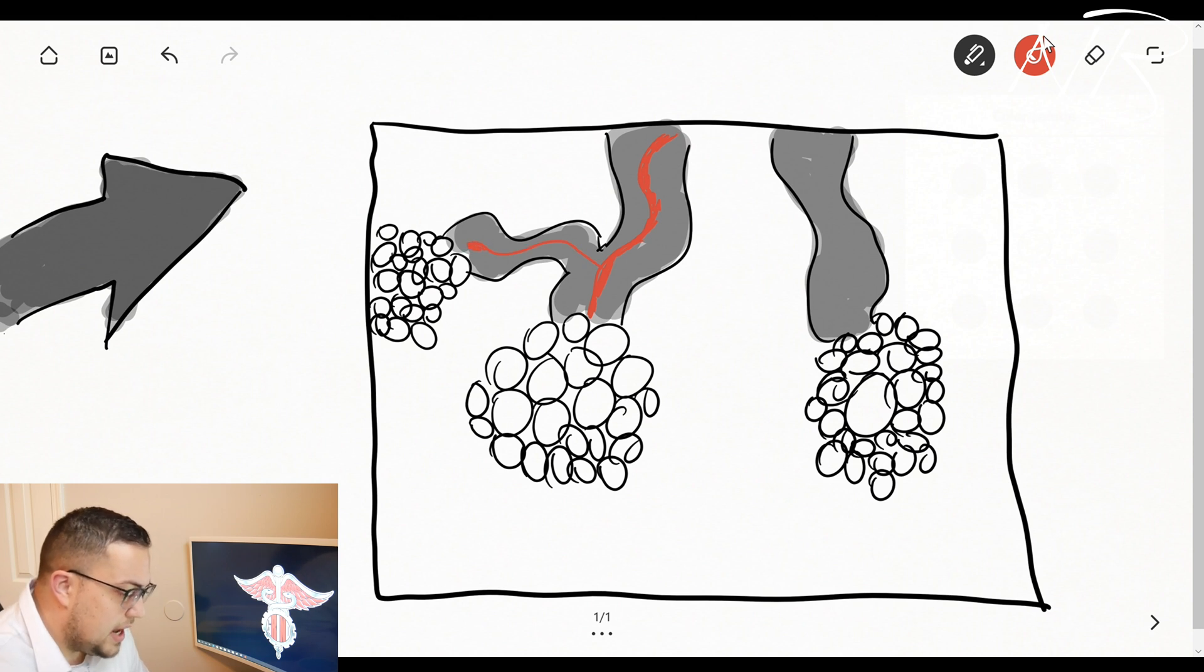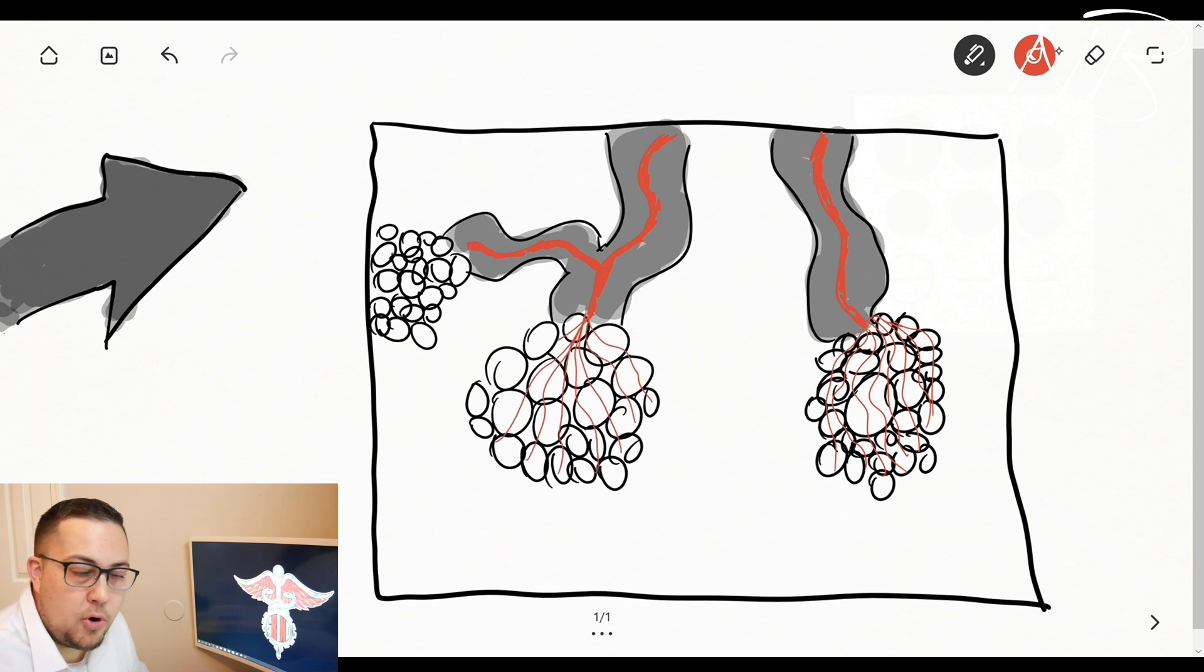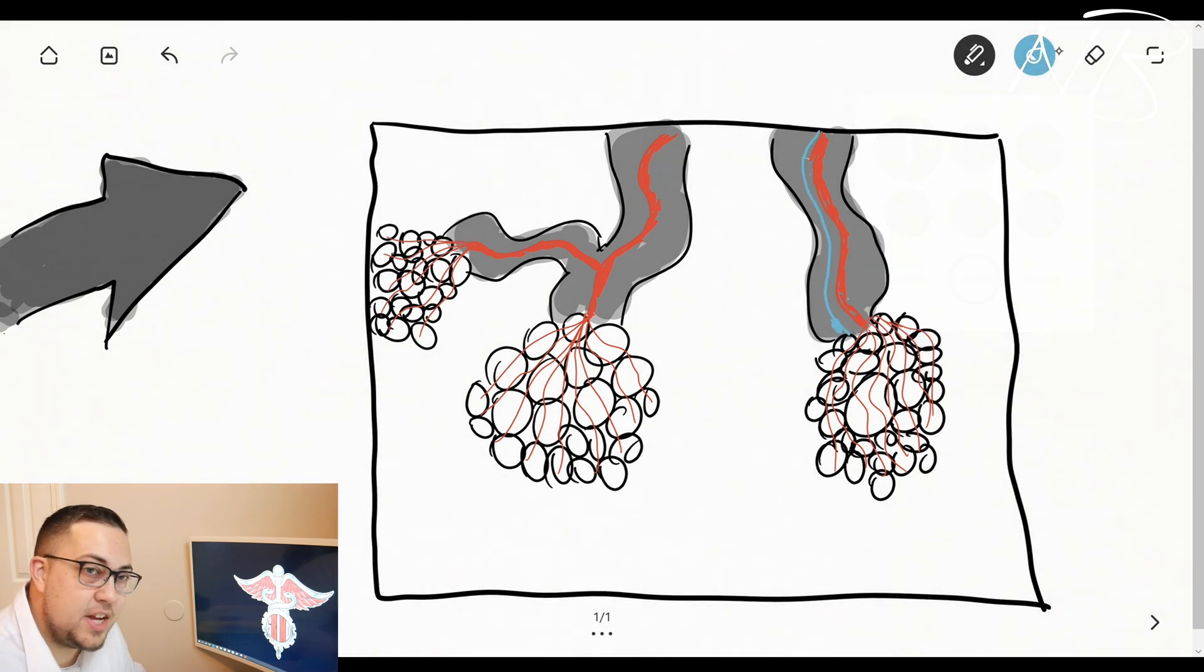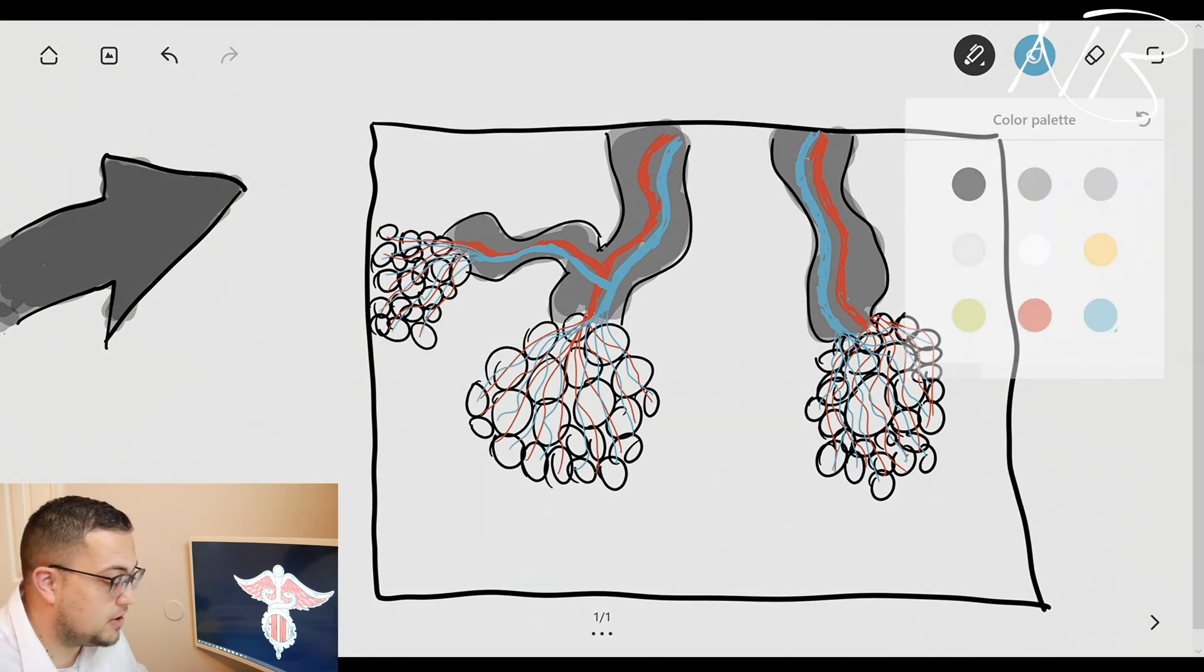It's important to note as we start to see these arteries and these veins get drawn here. Let's remember from our previous discussion on the anatomy of the heart, there's one unique thing about the pulmonary vasculature. Whenever our heart ejects deoxygenated blood up into our pulmonary vasculature, arteries pump blood away from the heart. But it's interesting because these pulmonary arteries carry deoxygenated blood. It's one of the unique things about the pulmonary vasculature system.